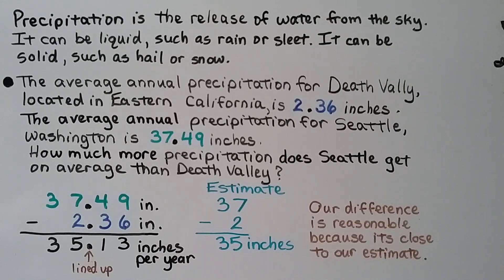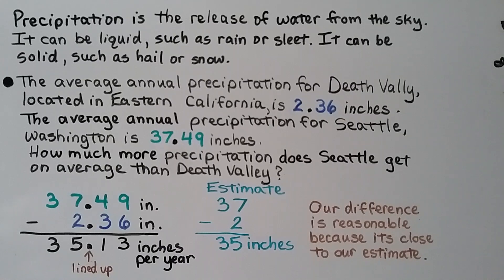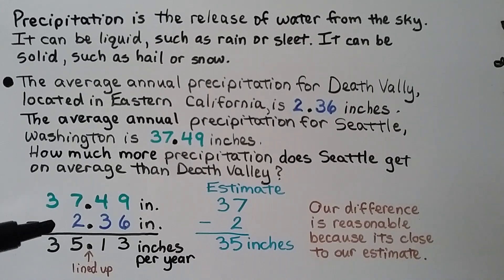Precipitation is the release of water from the sky — it could be liquid such as rain or sleet, or solid such as hail or snow. The average annual precipitation for Death Valley, located in eastern California, is 2 and 36 hundredths inches. The average annual precipitation for Seattle, Washington, is 37 and 49 hundredths inches. How much more precipitation does Seattle get on average than Death Valley? We have our Seattle number and we're going to subtract the Death Valley one to find the difference between them.